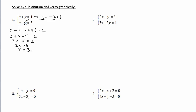To find the y-coordinate, we go back and use the equation already solved for y: y equals the opposite of x plus 4, so y equals negative 3 plus 4, which gives y equals 1. Our solution is the ordered pair (3, 1).